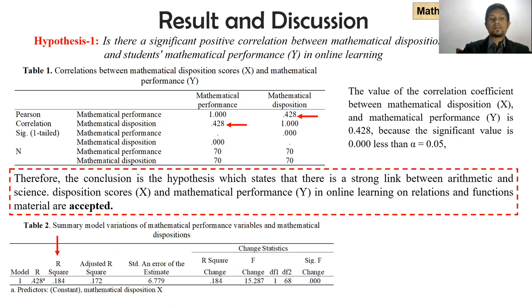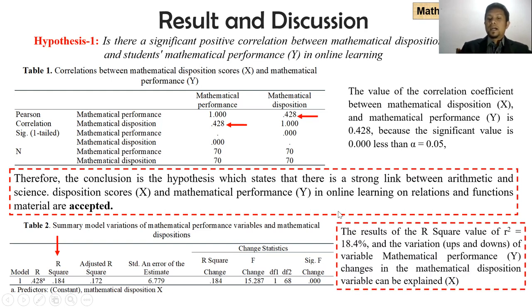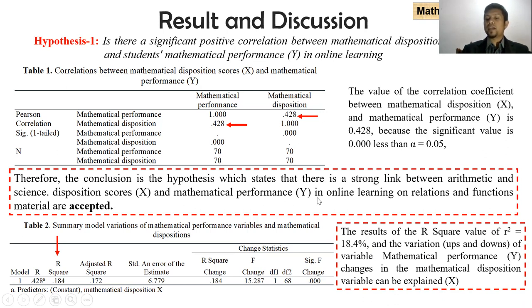Looking at Table 2 — summary model of mathematical performance variable and mathematical disposition — the R-square result is 10.4%. This means 10.4% of the variance up and down in mathematical performance Y is explained by the mathematical disposition variable X.